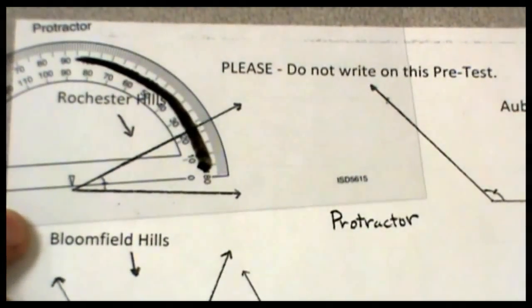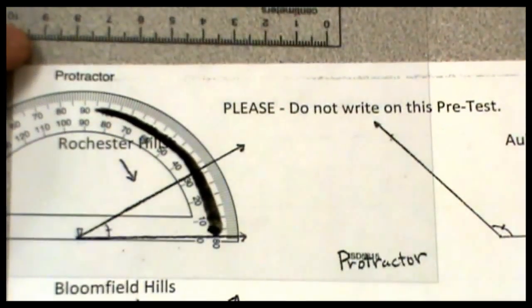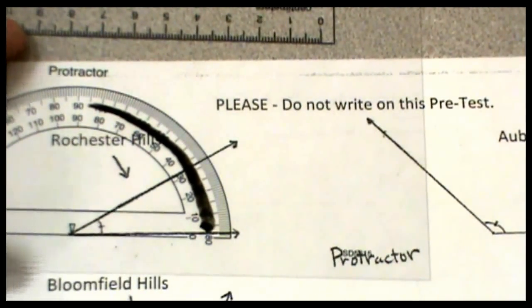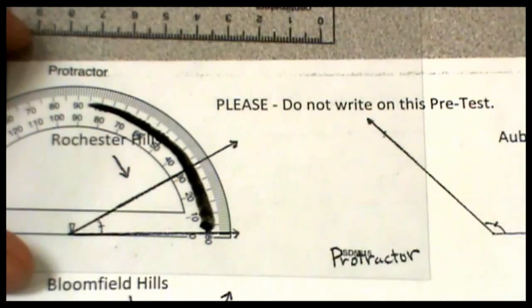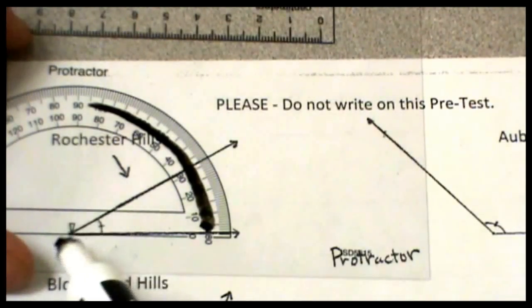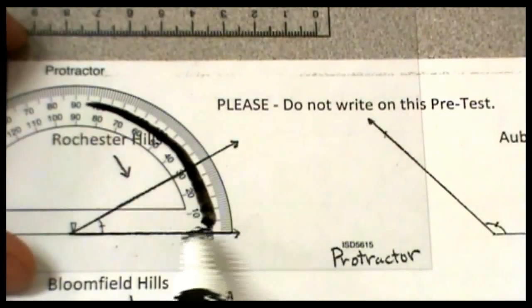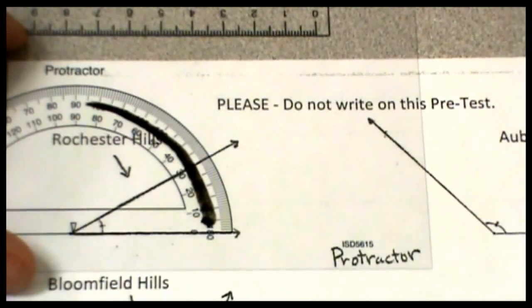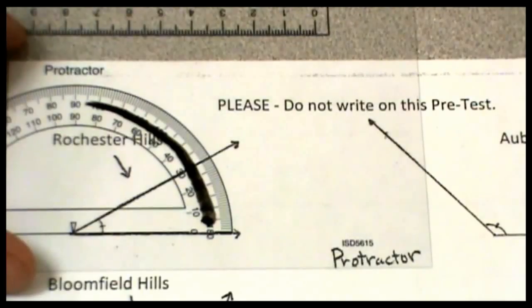I'm lining up my protractor, placing the triangle in the vertex. The vertex is where the two rays meet, right at the base of the angle. I need to make sure that the bottom line is lined up on the zero degree mark, and then I'm going to read the line that comes up from that angle and where it crosses on the protractor.